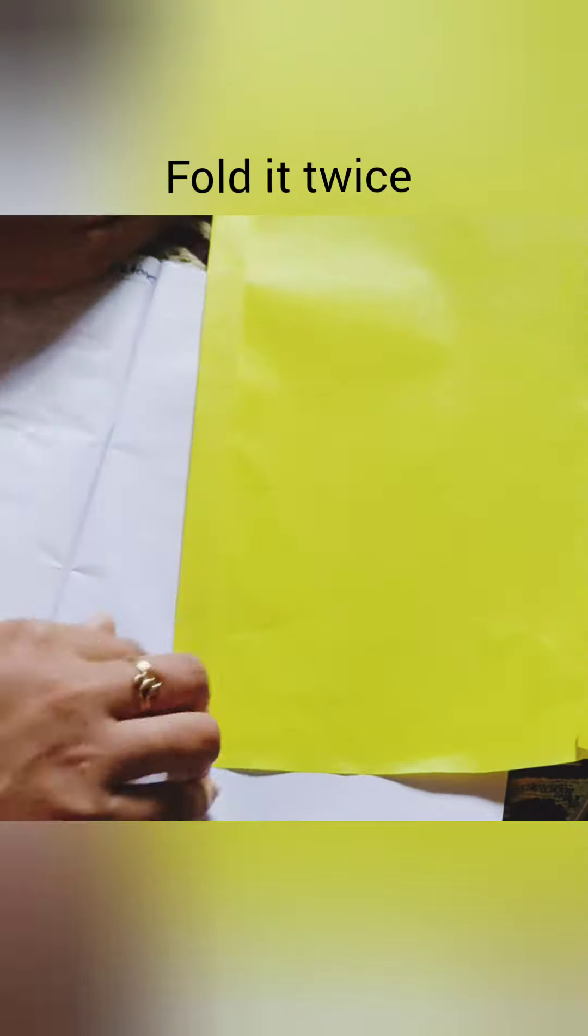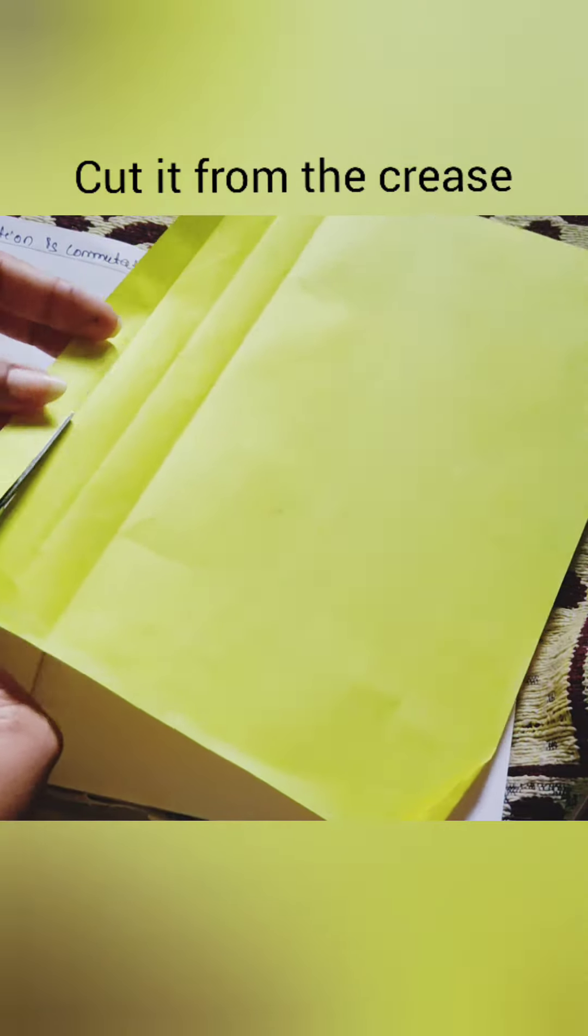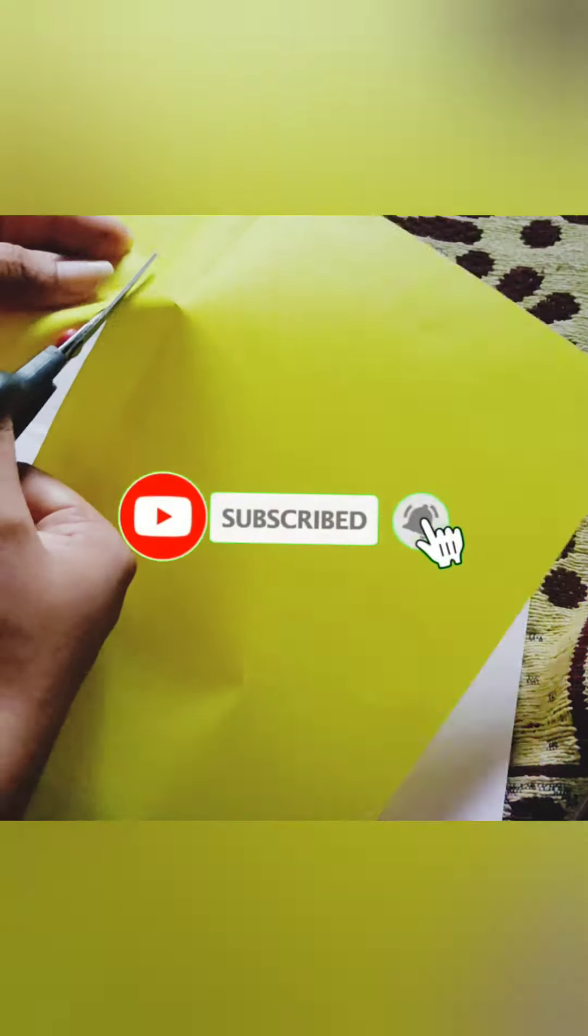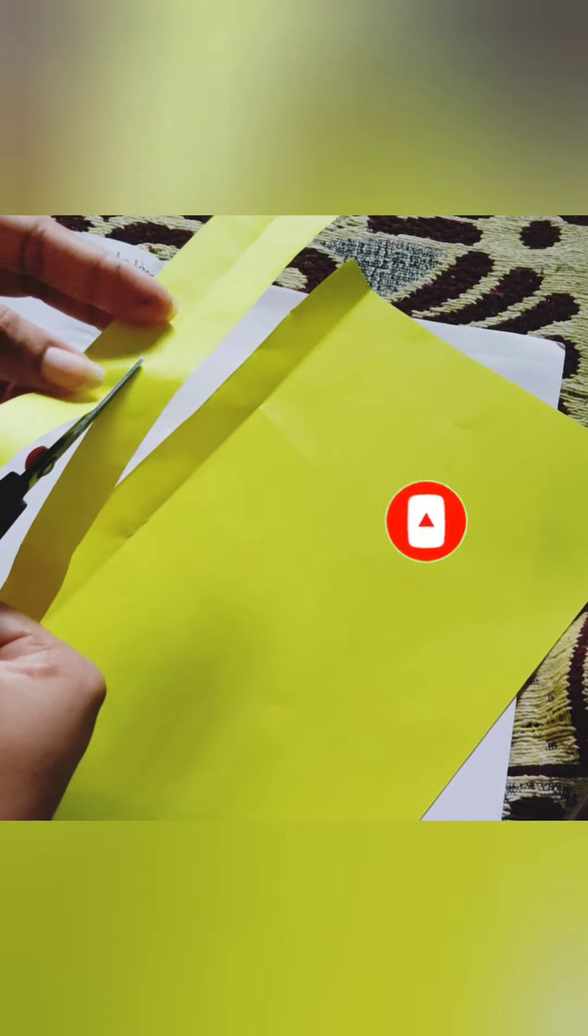Next, move to the next activity for multiplication. Take any color paper. Here I have used yellow color paper—you can use any color paper—and fold it twice and cut it from the crease. If you are new to my channel, then please subscribe and press the bell icon for further notifications.